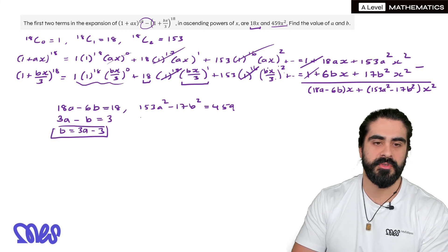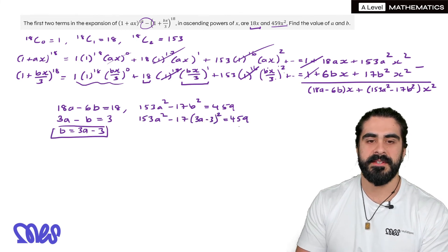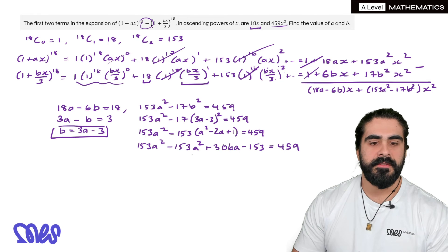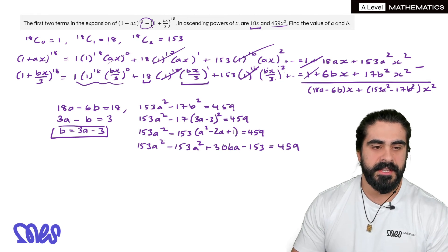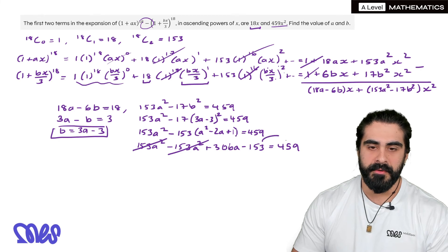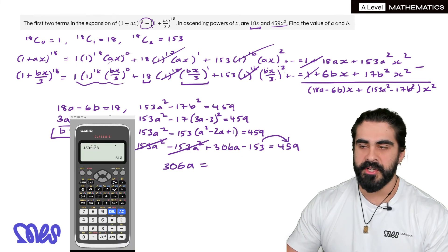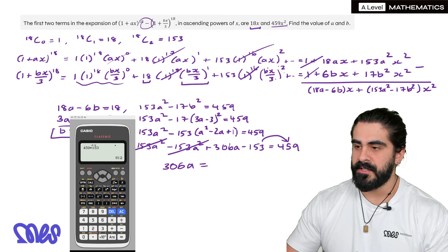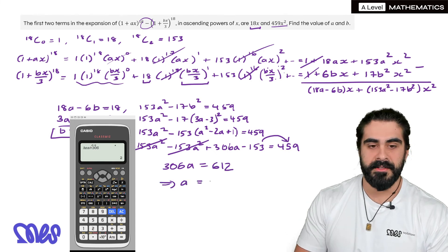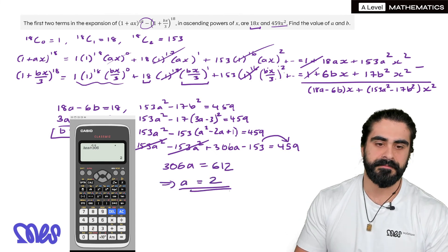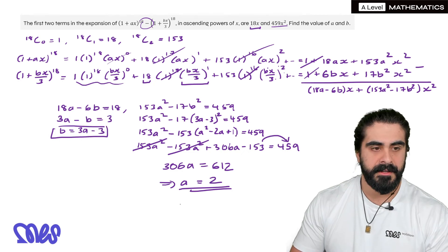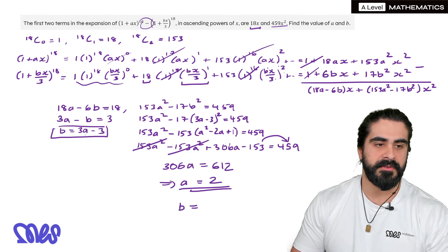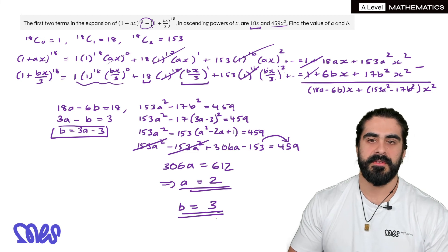Now we're going to plug into the quadratic. And now we're going to expand everything. So once everything is expanded, you can see actually that the 153a^2 terms cancel. And we're going to move this to that side. 612. I'm just going to remember that. Then we need to do 612 divided by 306. So a is 2. Then don't forget b. b is 3a - 3. So 3 times 2 is 6 minus 3. b is 3.